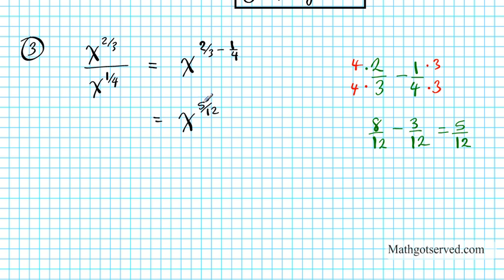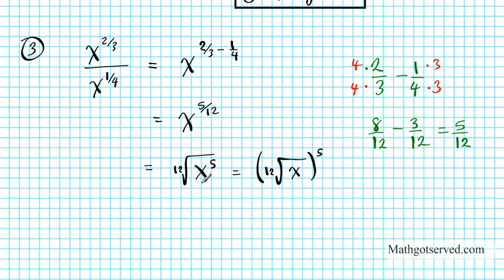Now x to the 5/12 is a fractional exponent that we can express in two other forms. The first form is the 12th root of x to the 5th — remember, the denominator is the root and the numerator is the power. The second form is the 12th root of x raised to the 5th power. Either form suffices as the simplified result of x to the 2/3 divided by x to the 1/4.